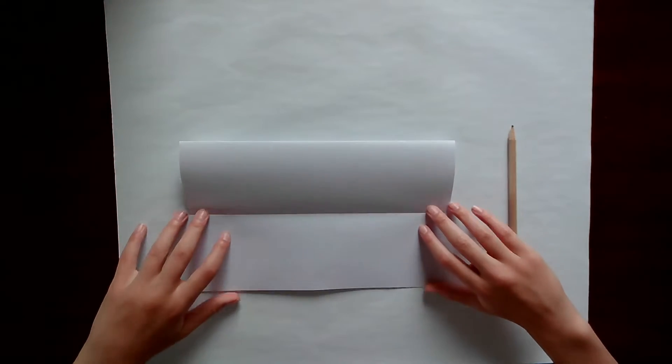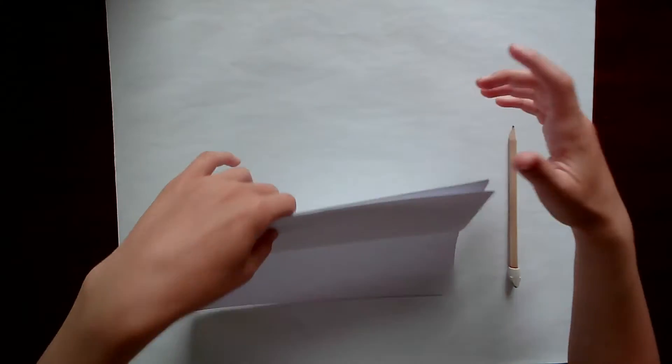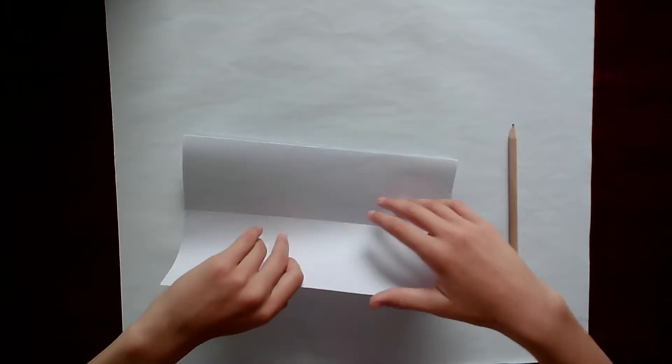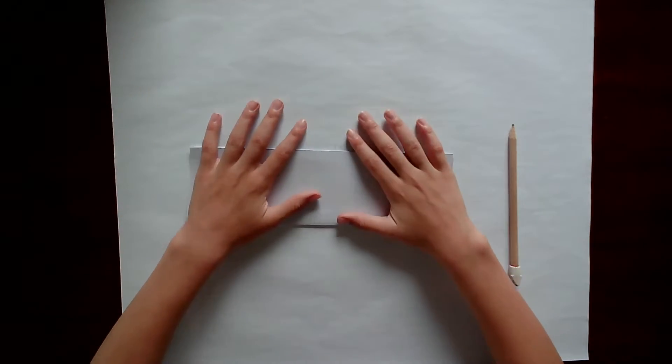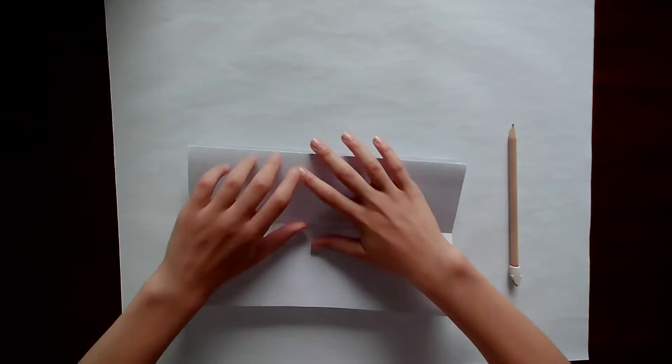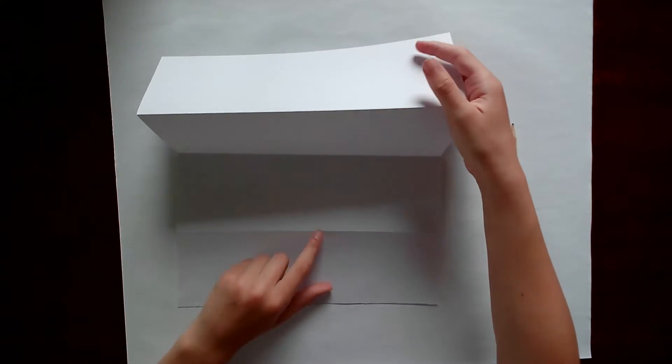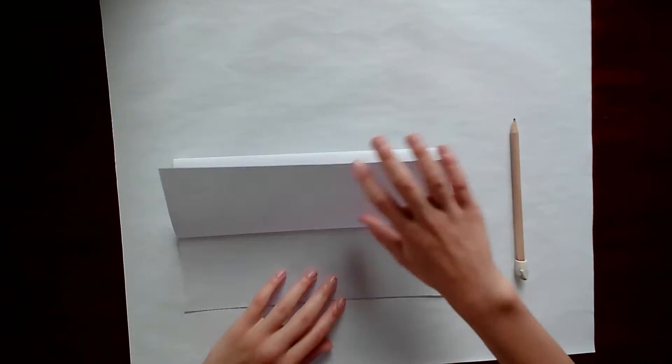You just fold it down, fold it again, turn around, fold it this side, and fold it back. Then you'll get a line to see the outline for what you're doing.